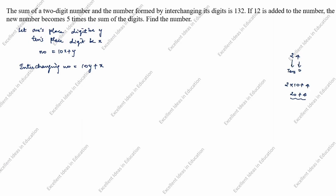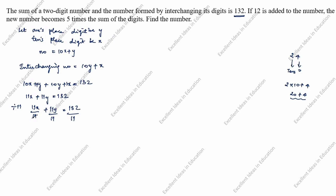According to the question, the sum of the two-digit number and the number formed by interchanging its digits equals 132. So: (10x + y) + (10y + x) = 132. This simplifies to 11x + 11y = 132. Dividing both sides by 11, we get x + y = 12. This is the first equation.